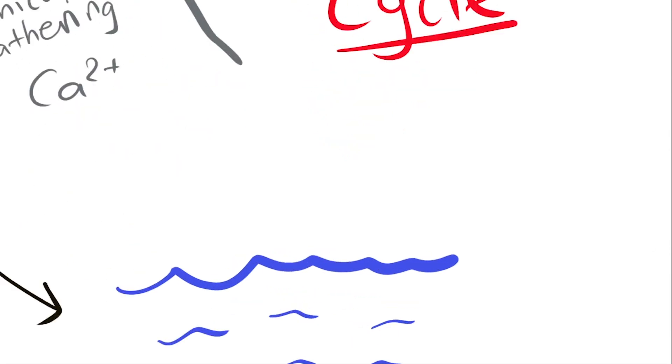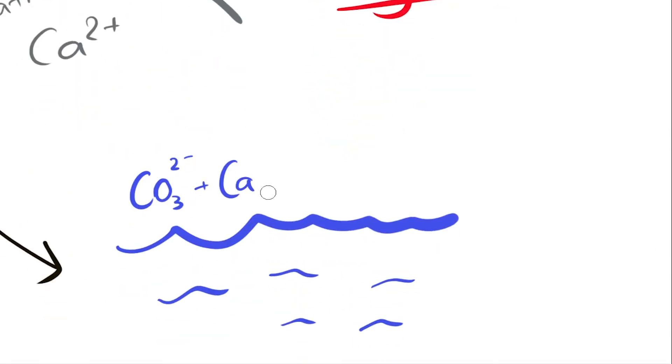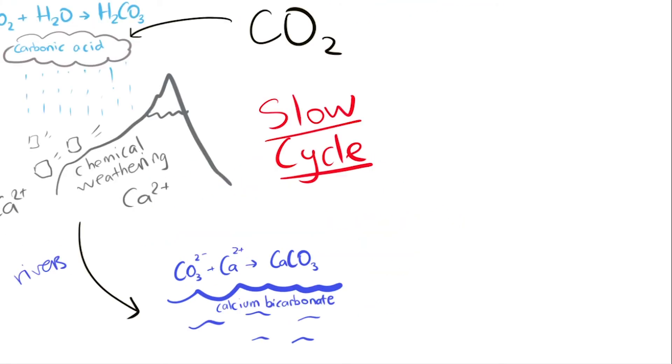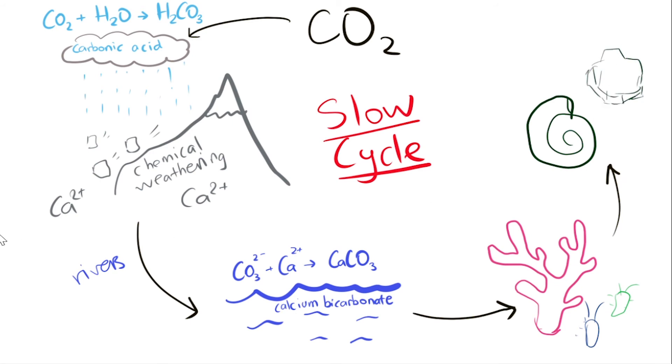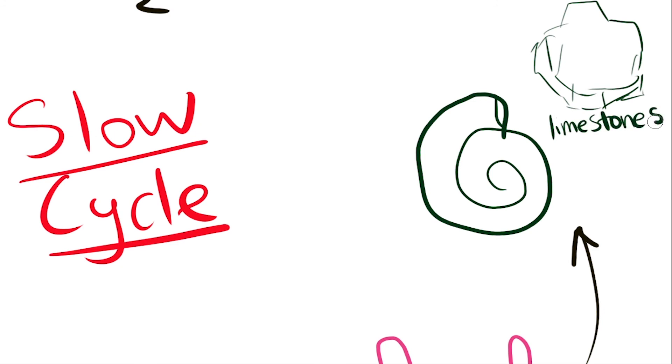In the ocean, the carbonate from the carbonic acid combines with the calcium ions, forming calcium bicarbonate. This is an essential ingredient for organisms in the ocean that build shells, such as corals and some planktons. When those organisms die and decay on the ocean floor, the carbon stored inside those shells will eventually cement together and form rocks, such as limestone, over extremely long periods of time, hence the term slow cycle.